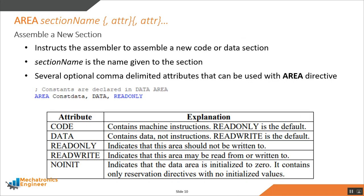Depending on the memory configuration of your device, code and data can reside in different areas of memory. The AREA directive allows the programmer to specify the memory location to store code and data. A name must be specified for an AREA directive, along with several optional comma-delimited attributes such as CODE, DATA, READONLY, and READWRITE. Here is an example of using the AREA directive to create a new data section called const_data.